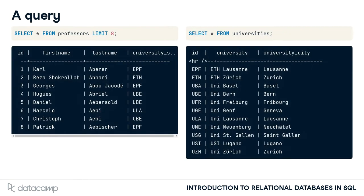Let's have a look at your database. As you can see, the column university_shortname of professors has the same domain as the ID column of the universities table. If you go through each record of professors, you can always find the respective ID in the universities table. So both criteria for a foreign key in the table professors referencing universities are fulfilled. Also, you see that university_shortname is not really a key because there are duplicates — for example, the ID EPF and UBE occurred three times each.